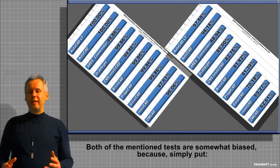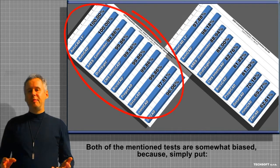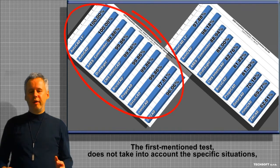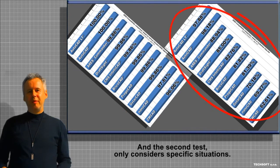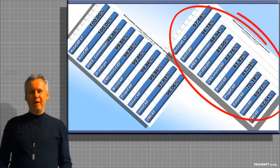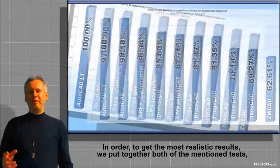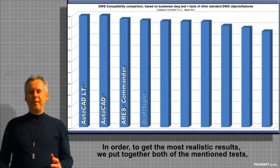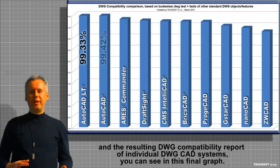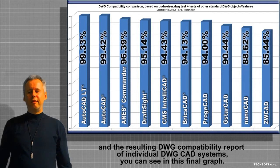Both of the mentioned tests are somewhat biased because, simply put, the first test does not take into account specific situations, and the second test only considers specific situations. In order to get the most realistic results, we combined both tests, and the resulting DWG compatibility report of individual DWG CAD systems you can see in this final graph.